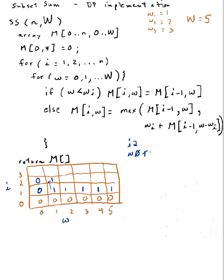Increment w. Is 2 less than 2? No, it isn't. So m[2][2] is going to be the max of m[1][2] or w sub 2 which is 2 plus m[1][2 minus 2] which is m[1][0]. m[1][2] has value 1 and m[1][0] has value 0. So I'm choosing between 1 or 2 plus 0, giving 2. The answer is 2.